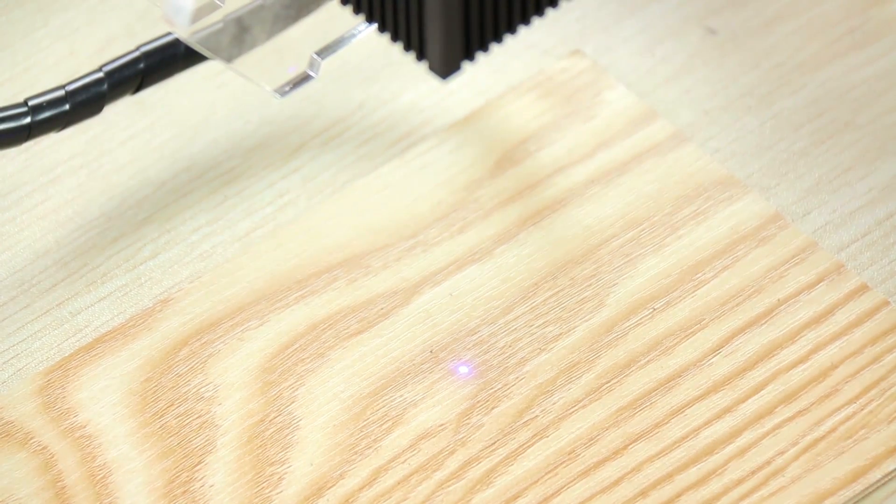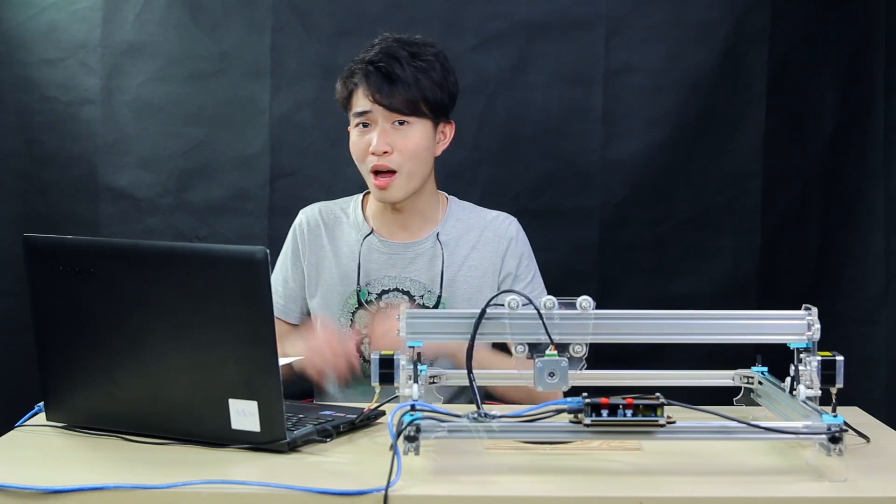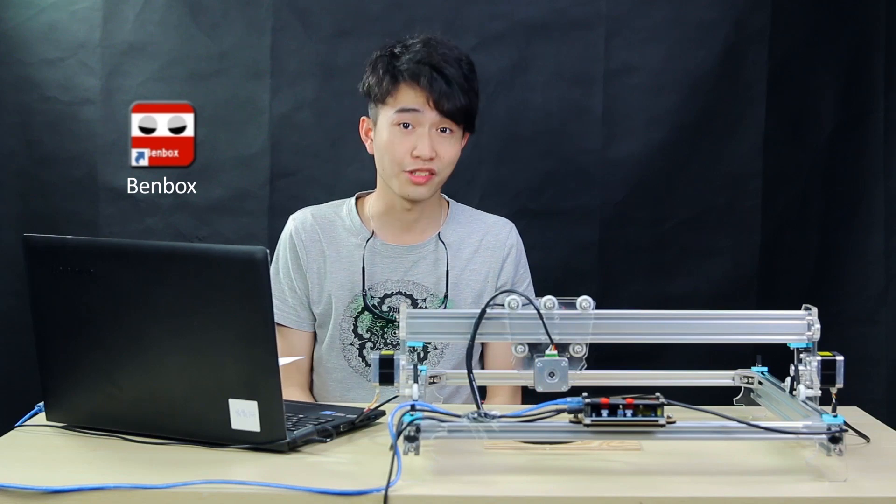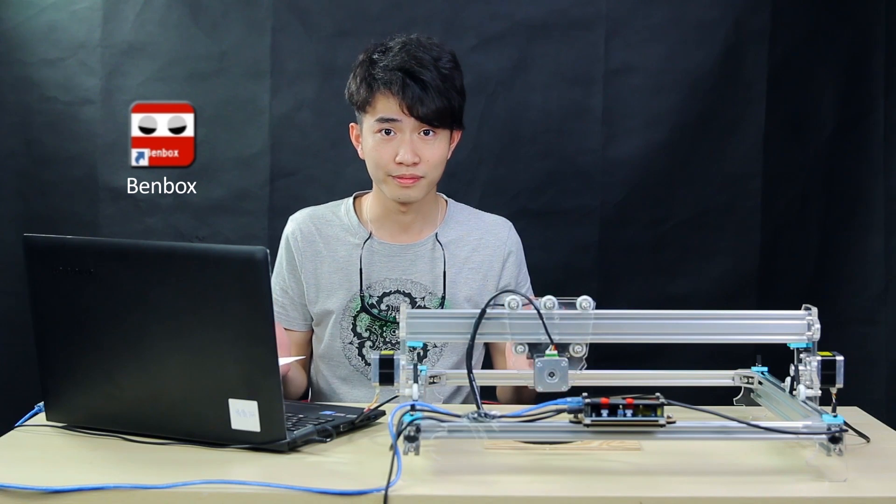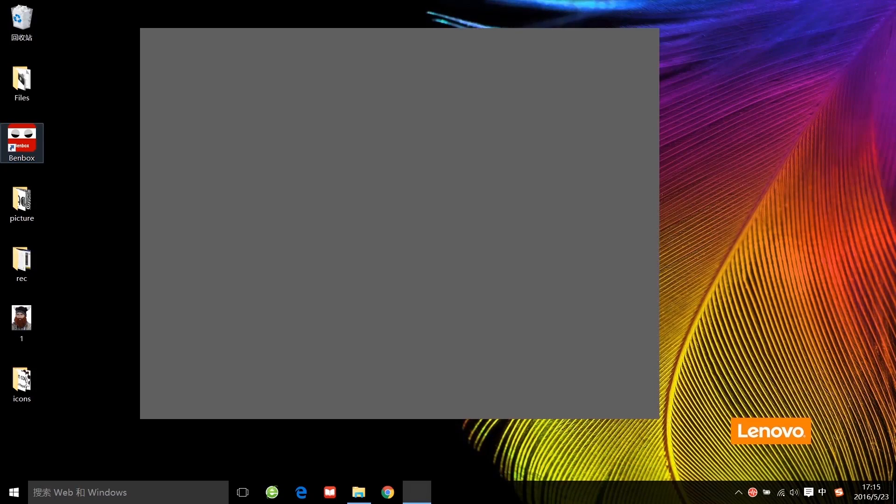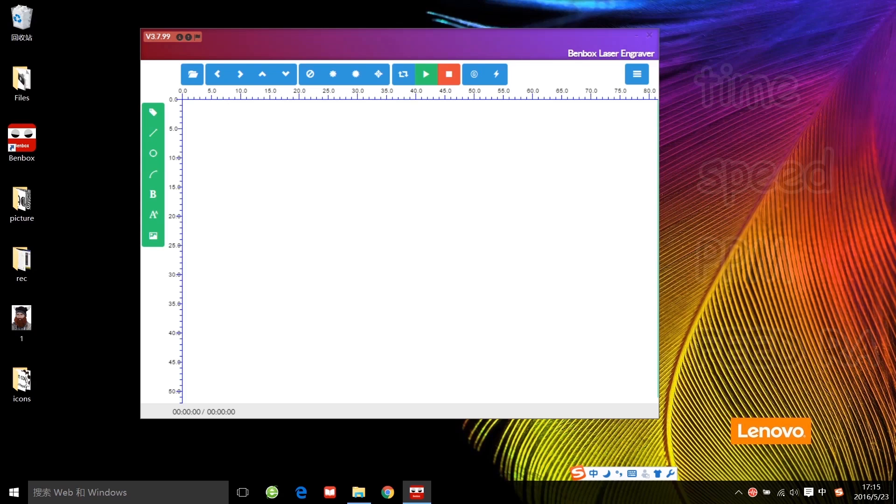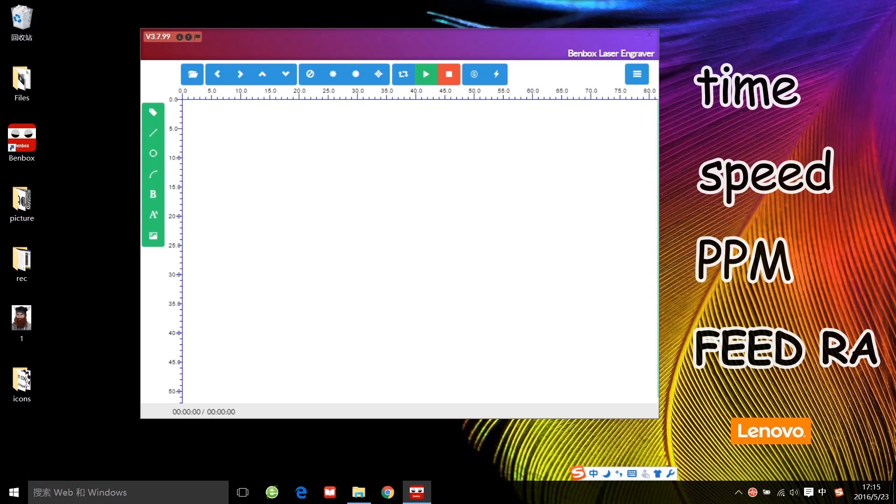All right, now we can set up the parameters on the Benbox and start the engraving. Here's Benbox. I'll introduce four key parameters to you: time, speed, PPM, and feed. You'll see the last two parameters in the next page. Click this button to change to the English version first.